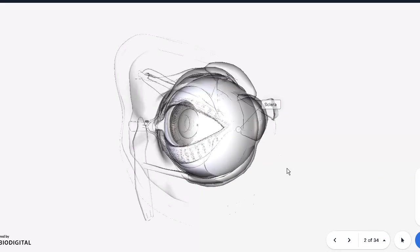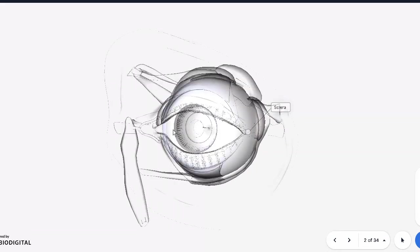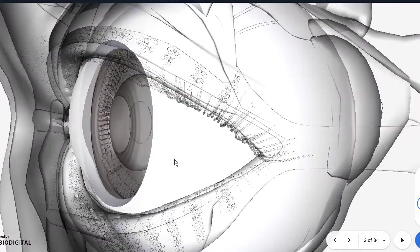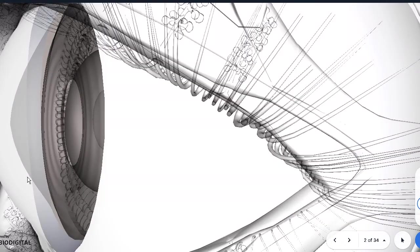And this sclera also ends anteriorly, right here, where it forms the cornea. The transparent part you see in front is actually the cornea. And this margin is the limbus, where the sclera and the cornea meet.